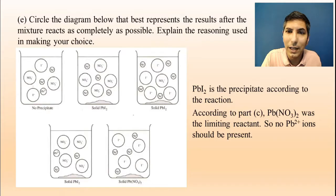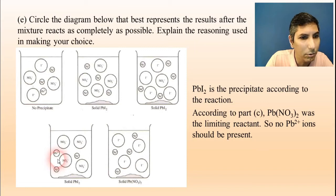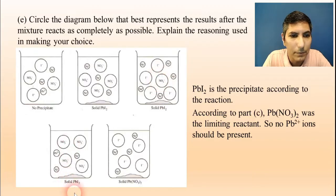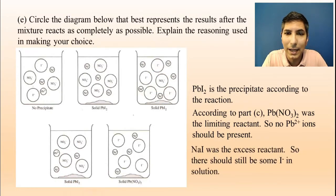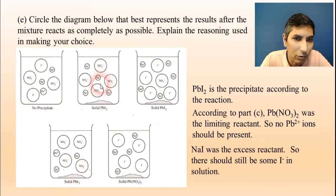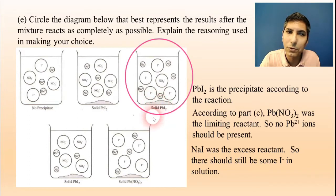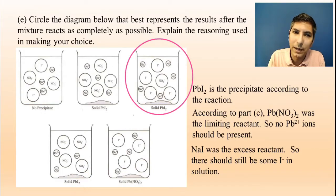We also know, according to our work in part C, that lead(II) nitrate was the limiting reactant. That means that there should not be any lead ions swimming around in solution. So because of that, that means I can take this one out because there's a lead ion swimming around in that fourth choice there. So I'm already down to two choices. It's either number two or number three. So the last thing I know is that sodium iodide was the excess reactant. That was from the same part C. If lead(II) nitrate was limiting, the other one, sodium iodide, had to be left over. So that means I should be seeing some iodide still swimming around. And I don't see that in the second choice, whereas I do over here. So really the only choice that makes sense using the things that I know would be the third choice right there. So once again, when you have a graphical problem like this, use what you know to slowly eliminate the choices and get the right answer.